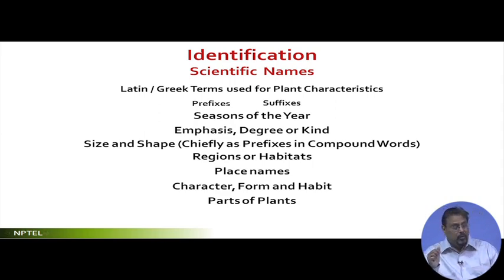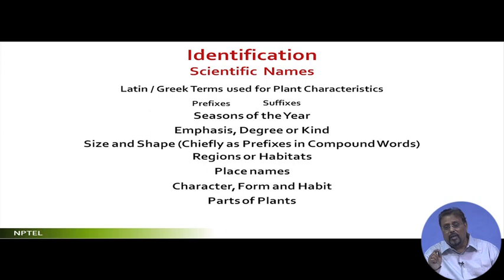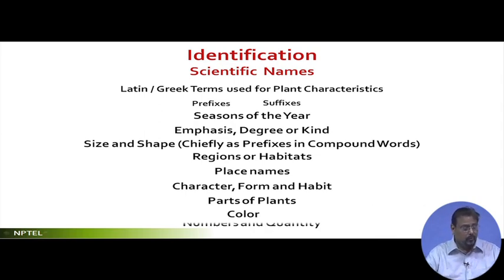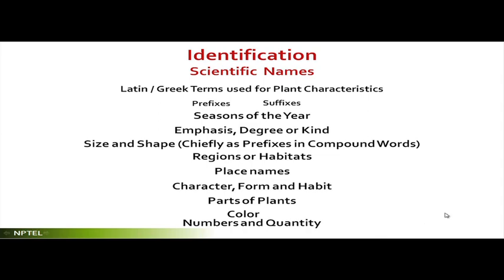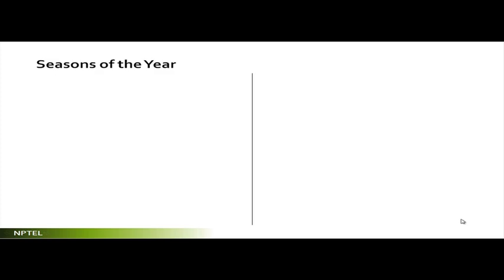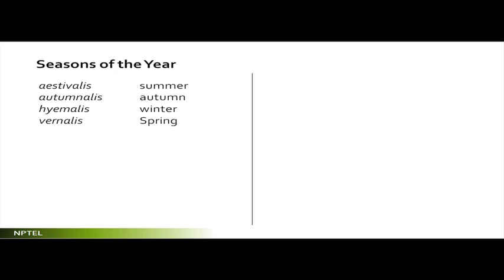Elongatus is elongated, giganteus is huge, gracilis is slender, grandis is large, and lati is wide. For example, Madhuca latifolia — the mahua tree whose fruits are used for making country liquor. The botanical name is Madhuca latifolia; latifolia splits into lati (wide) and folia (leaf). Similarly, Polyalthia longifolia: longi (long) and folia (leaf). Macro is large, maximus is very large, mega is large, micro is small, minimus is very small, ortho is straight.